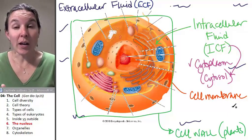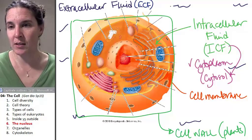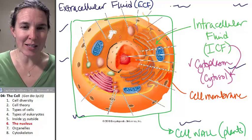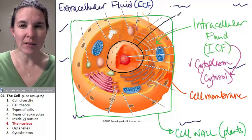This cell is a eukaryote because it does have a nucleus. I'm going to trace my nucleus. I'm going to trace this cell's nucleus. Look at this thing. That's the nucleus of the cell.